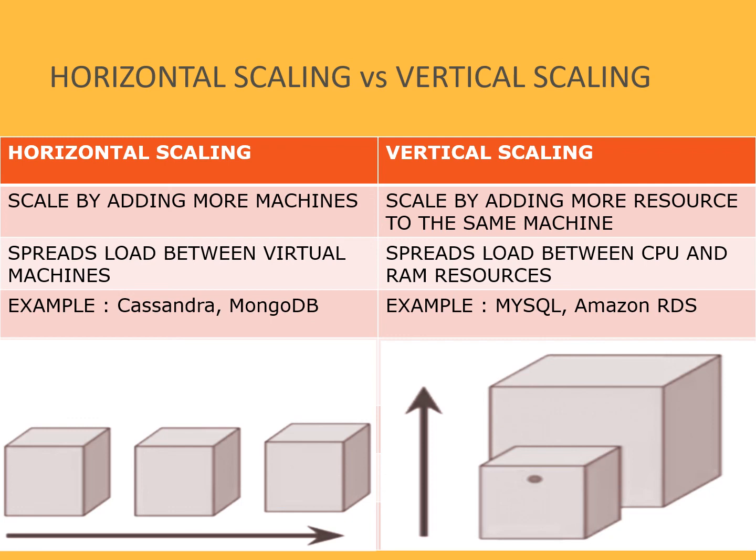Horizontal scaling spreads the load between virtual machines, so there are similar machines supporting the overall workload. Vertical scaling spreads load between CPU and RAM resources. Examples of horizontal scaling include Cassandra and MongoDB. Examples of vertical scaling include MySQL and Amazon RDS. That's the basic difference between horizontal scaling and vertical scaling.